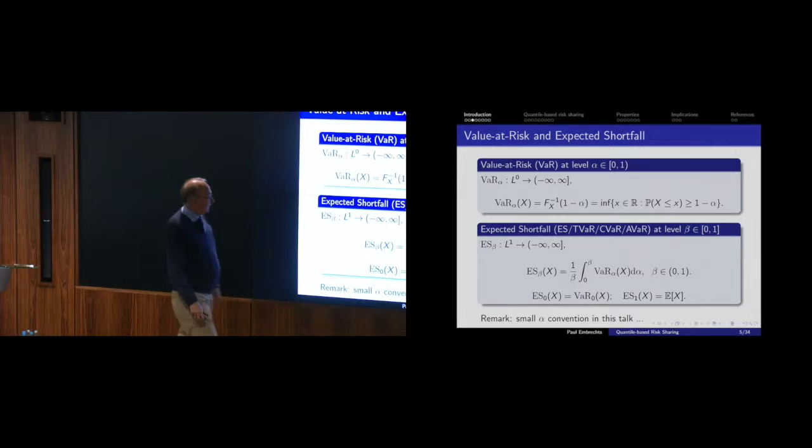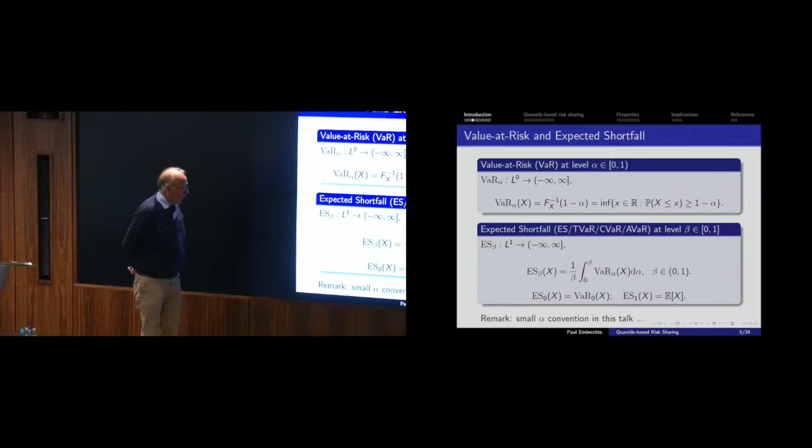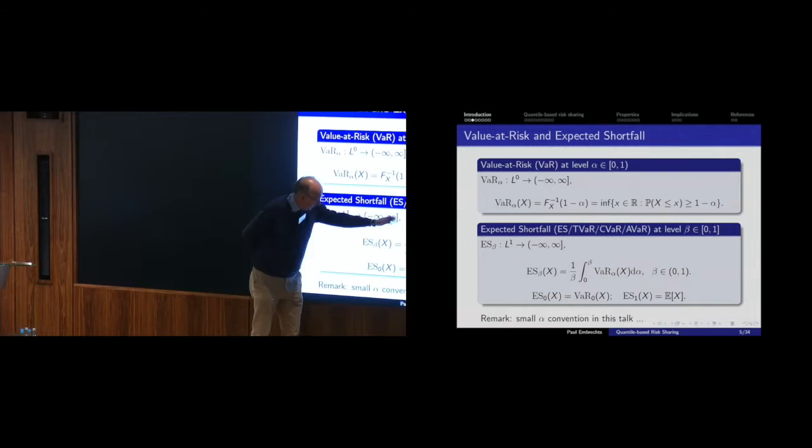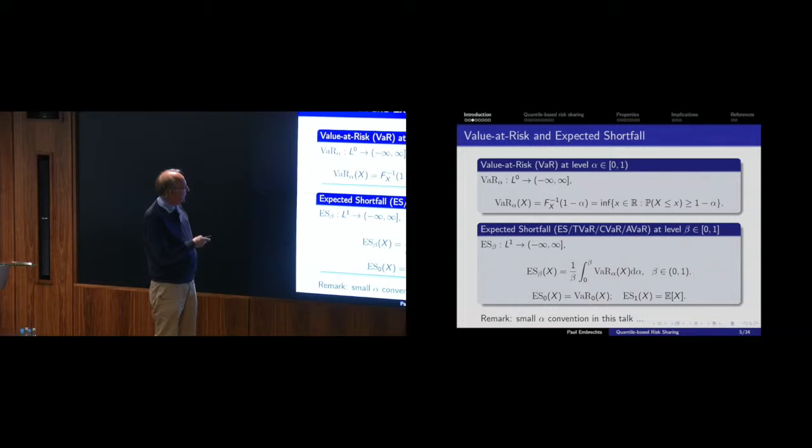Expected Shortfall of zero is the VaR at zero; Expected Shortfall of one is just the expectation. These are classical definitions. The only thing to note is a slight change of notation. For a continuously distributed variable, the L1 condition is needed.